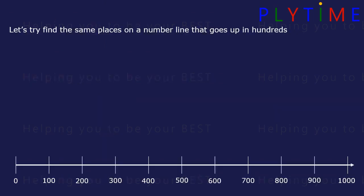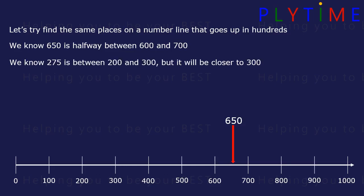Let's find the same places on a number line that goes up in hundreds. We know 650 is halfway between 600 and 700. It will be here. 275 is between 200 and 300, but closer to 300. It will be here.